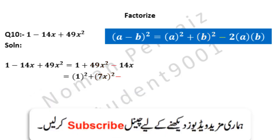Minus is written as it is. We write 2 here because we have to complete our formula given above. Looking at the formula, we have to write a, and our a is 1, so we write 1. Then b is to be provided, so our b is 7x. If you multiply 2 with 1 it becomes 2, then this 2 multiplied by 7 becomes 14, and x is written with it, so it becomes 14x.